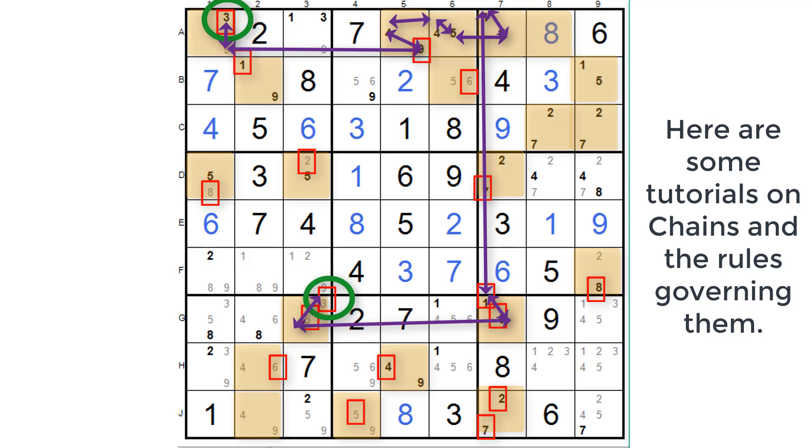That was simple. From that we're going to be able to get rid of the three in A3. We're also going to be able to get rid of the threes in G1 and H1.